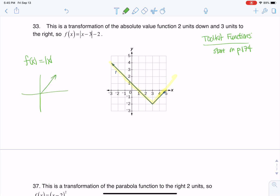Because the absolute value of X, if we graphed it, looks like this V. So this thing that we have here is just a version of that function.